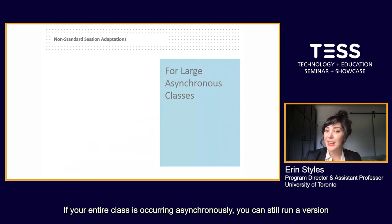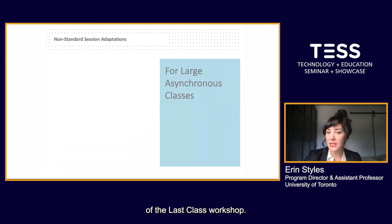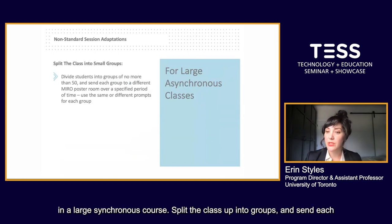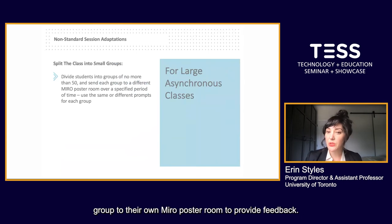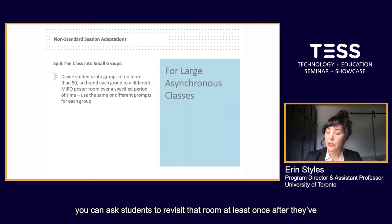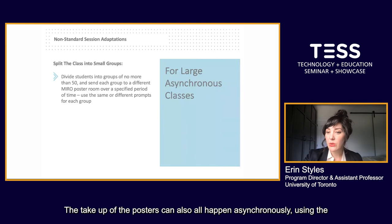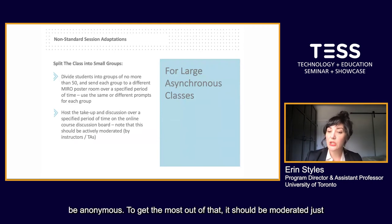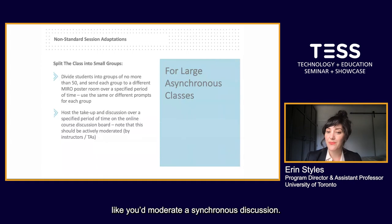If your entire class is occurring asynchronously, you can still run a version of the Last Class Workshop. The first part will be very similar to what you would do in a large synchronous course: split the class up into groups and send each group to their own Miro poster room to provide feedback. Since the feedback is going to be coming in asynchronously, you can ask students to revisit that room at least once after they've provided their initial comments to respond to their peers. The take-up of the posters can also happen asynchronously using the online course discussion board, which unlike the posters will not be anonymous. To get the most out of that, it should be moderated just like you'd moderate a synchronous discussion — ask clarifying questions and prompt for responses when needed.